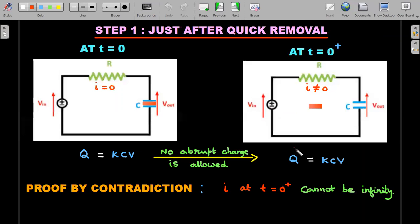Here we move ahead with the concept. I have divided this removal and further subsequent time into two steps. One is the quick removal where we'll analyze the circuit just before to just after the removal. I have assumed that the instant of removal is t equals zero and just after is considered as t equals zero plus.